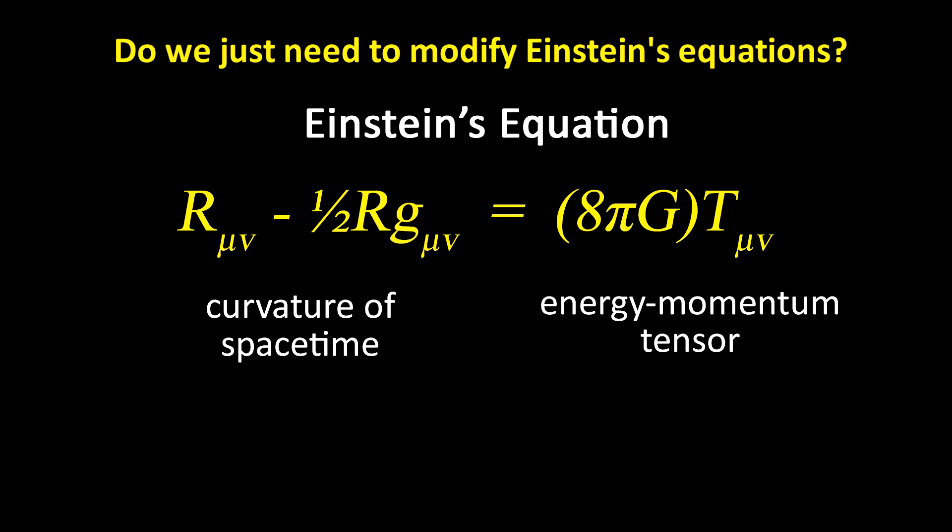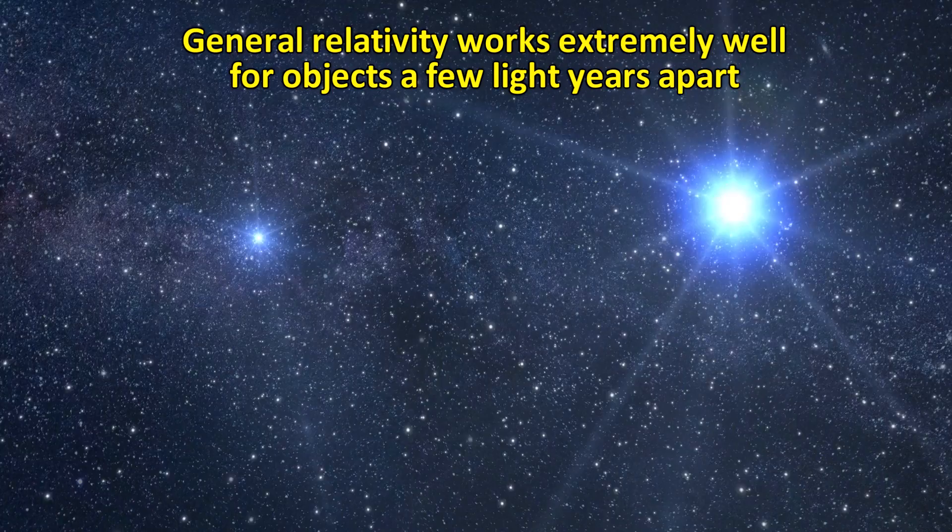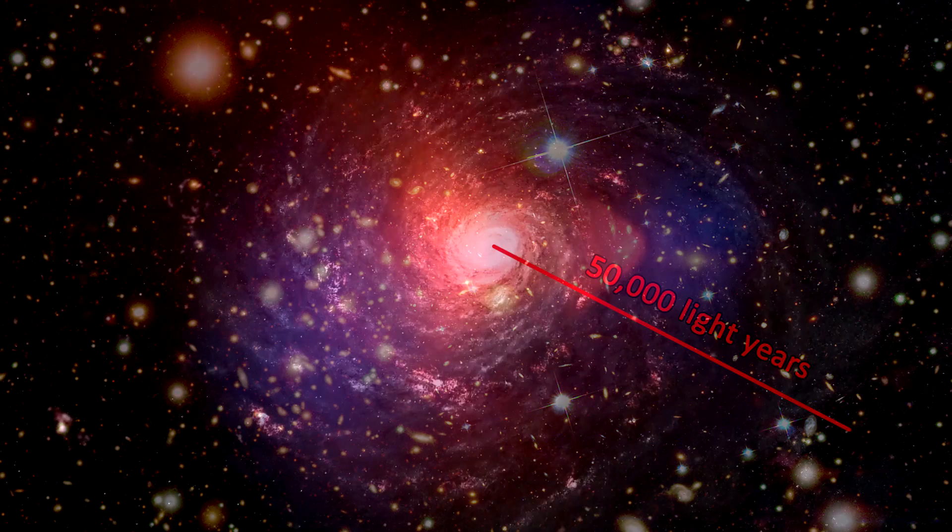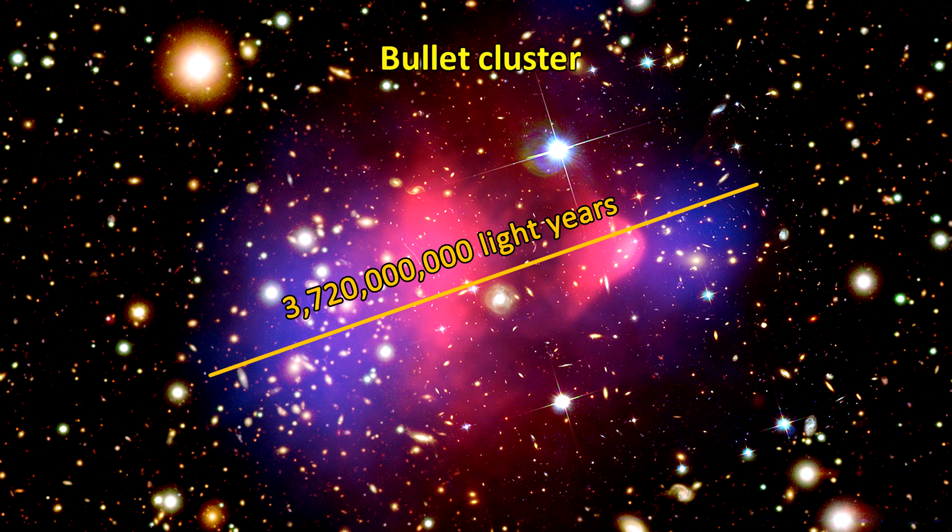General relativity has been shown to be highly accurate for massive objects that are very short distance apart, up to several light years. But when it comes to the galaxy, we are looking at a radius of 50,000 light years, and clusters that are millions of light years across. Is it possible that gravity behaves very differently at thousands of light years across than it does at say one light year across? Is there a better, more accurate theory than general relativity?